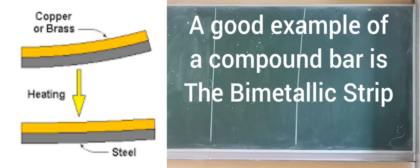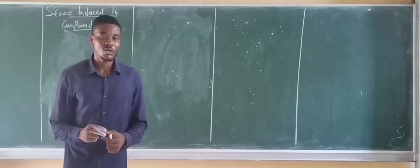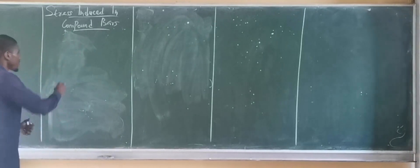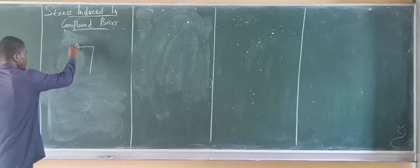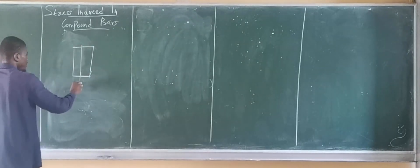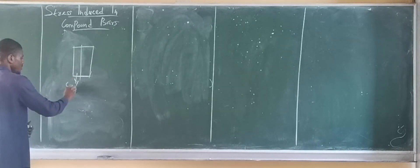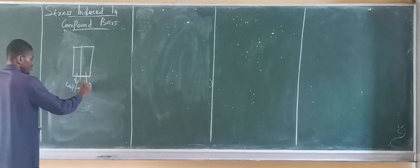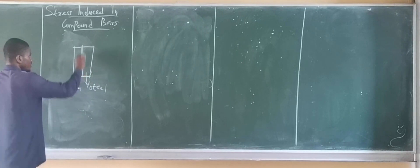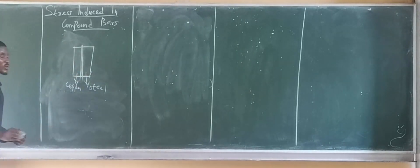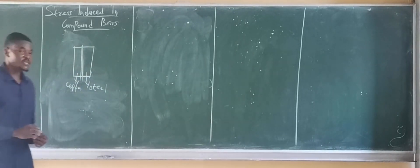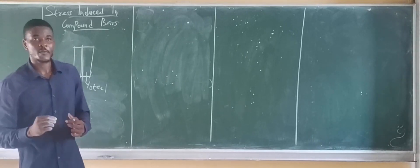A good example is what we call a bimetallic strain. So let's say we have two bars that are joined together. Let's say we have two bars, this is the upper bar, and it is still joined together at this point, by measure of either a bolt or by welding.